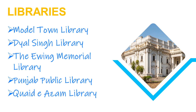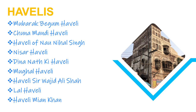There are a number of libraries in this city of literature to fulfill the thirst of literary people. Some old libraries are: number one, Model Town Library; number two, Dayal Singh Library; number three, Devine Memorial Library; number four, Punjab Public Library; and number five, Quaid-e-Azam Library.